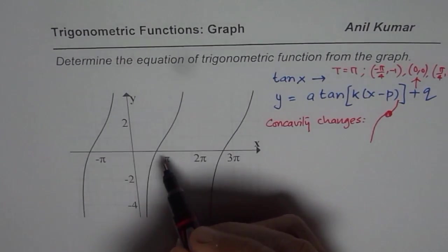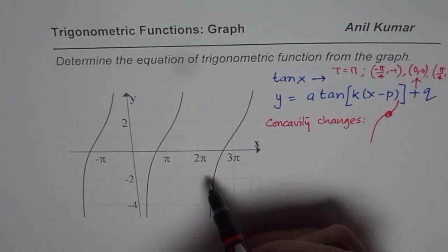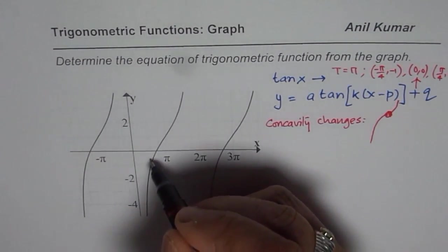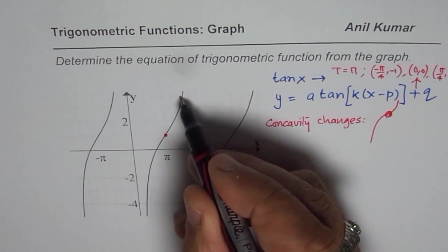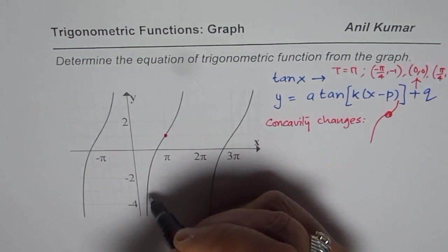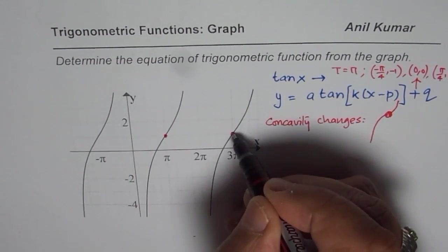In this graph, you can see very clearly that the graph goes like this, and at this point, the concavity changes. It becomes concave upwards. Here it is downwards. So that is the point.